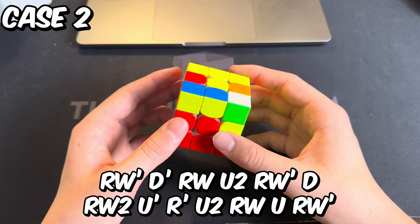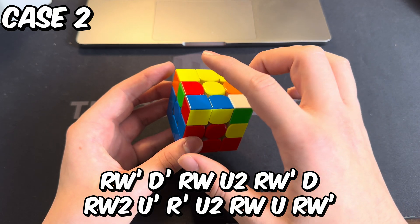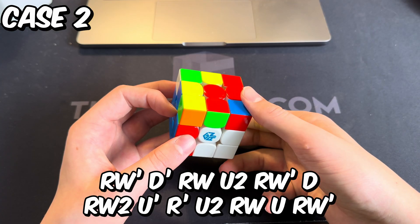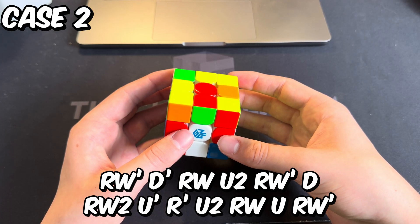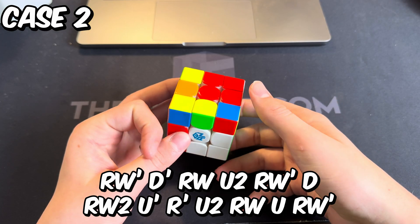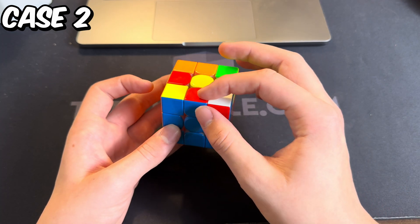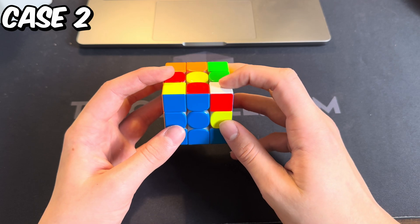...and then undo those first two moves. Now what you have is this case which you can solve doing wide R, U prime, wide R prime, U2. Alternatively, if you have the pair in the front, you can do a hedge, take out the pair, and solve it like this.